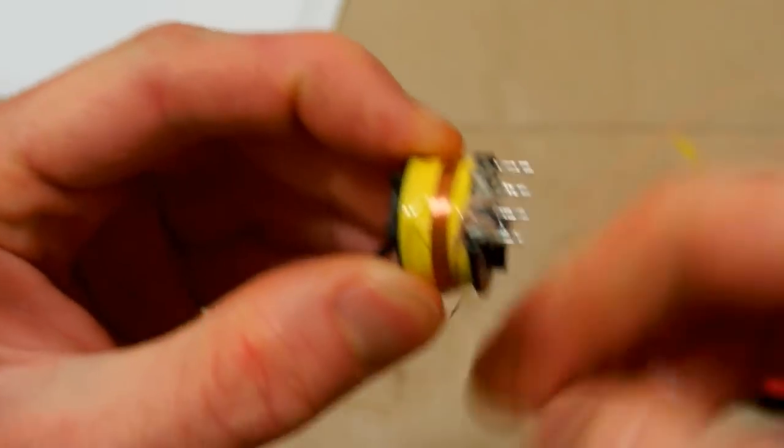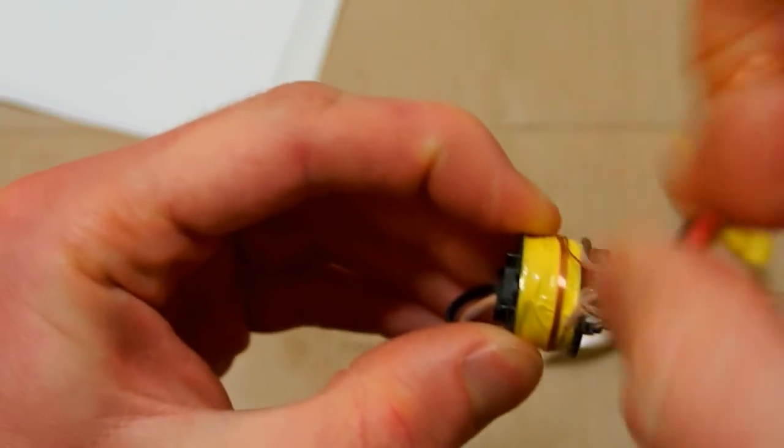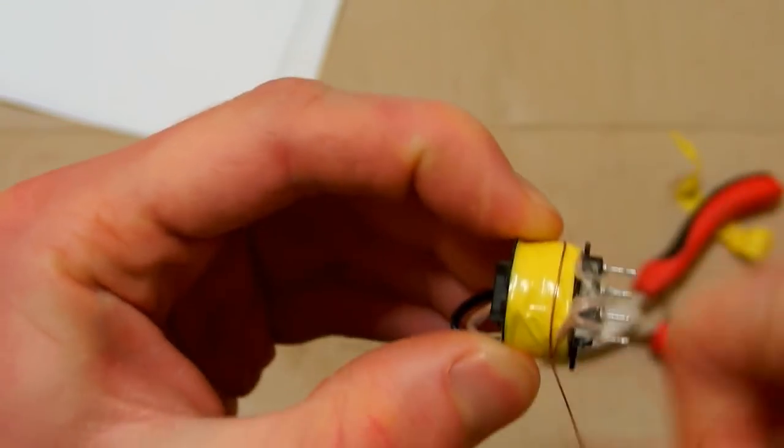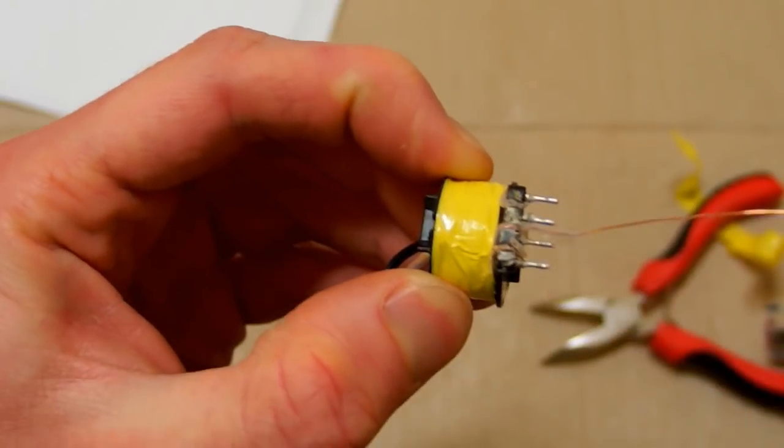So here's the auxiliary winding. Now let's remove it. One, two, three, four, five, six, seven, eight, nine turns.